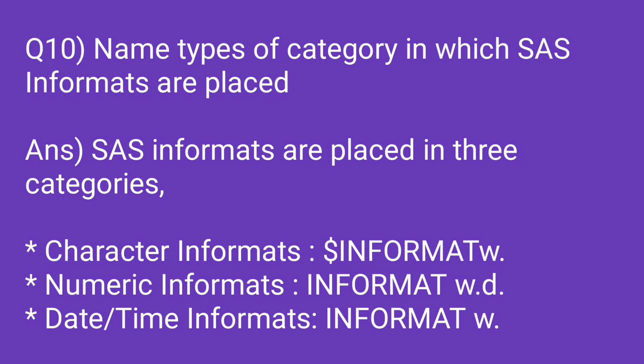Name the types of categories in which SAS informats are placed. SAS informats are placed in three categories: character informats, numeric informats, and datetime informats.